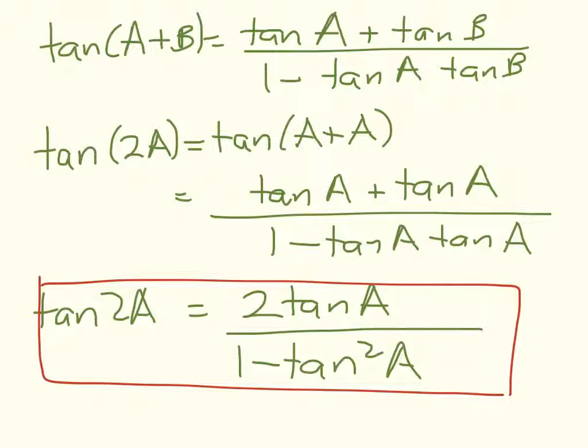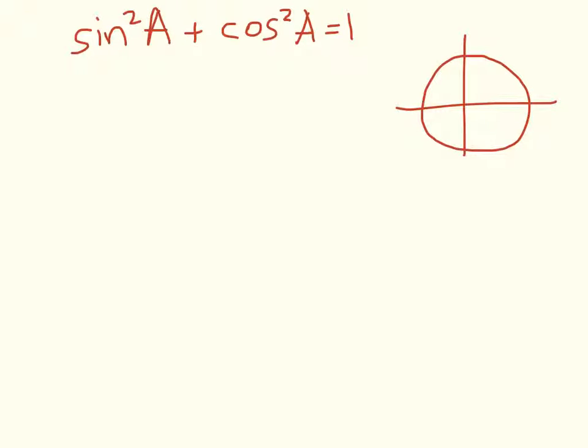However, there are a couple of really nice things that I can do with the cosine of 2A formula. So we'll move on to that now. Remember from last week that sin squared of A any angle plus cosine squared of A equals 1. All right, now we can see that. Just think about your unit circle.